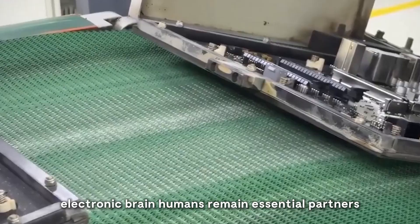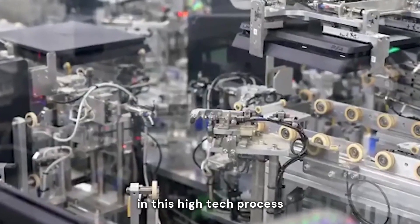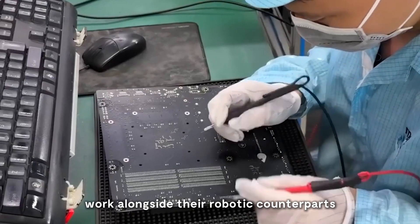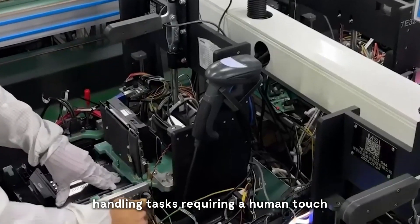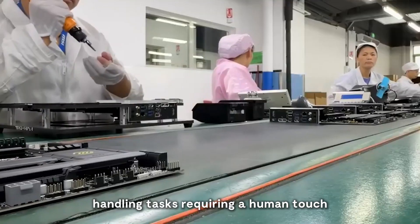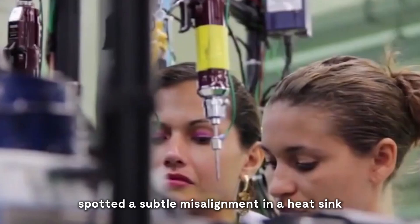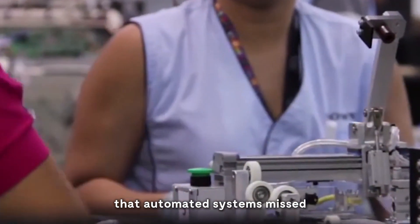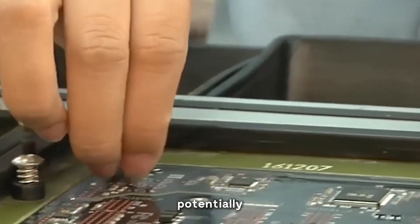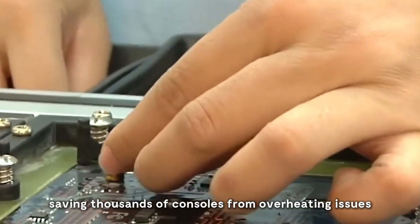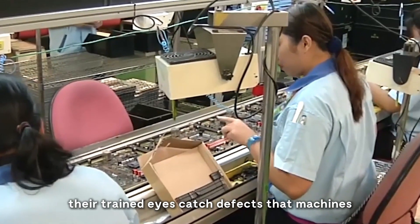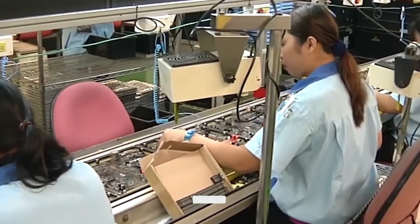Humans remain essential partners in this high-tech process. Sony's skilled technicians work alongside their robotic counterparts, handling tasks requiring a human touch. One supervisor recently spotted a subtle misalignment in a heatsink that automated systems missed, potentially saving thousands of consoles from overheating issues. Their trained eyes catch defects that machines simply can't detect.